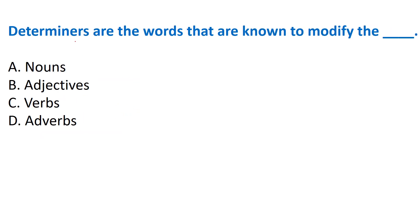Next question: 'Determiners are the words that are known to modify...' Options: A) Noun, B) Adjective, C) Verb, D) Adverbs. The correct answer is Option A - determiners are the words that are known to modify the noun.